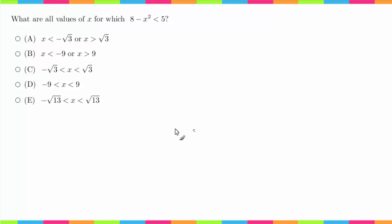So in order to solve this problem, I'm going to treat this inequality roughly as just an equal sign, and I'm going to isolate x. So first thing I'm going to do is bring the 8 over here, so I'm going to get negative x squared is less than 5 minus 8, which is negative 3.